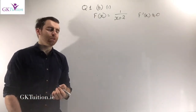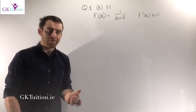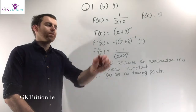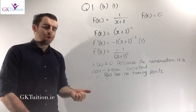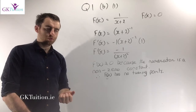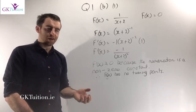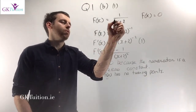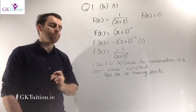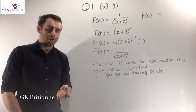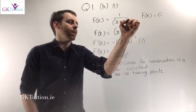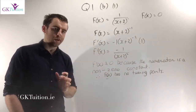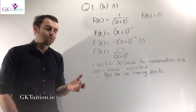To prove no turning points, find the first derivative and state why it can never equal 0. There are a couple of ways to get the derivative. Most of you went for the quotient rule, but it's much harder. A far easier way is to eliminate the fraction: 1 over x plus 2 becomes x plus 2 to the power of minus 1 using the rules of powers on page 21 of your maths tables, and then use the chain rule.